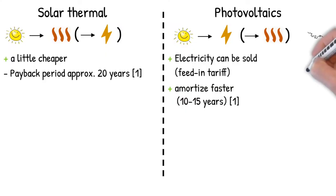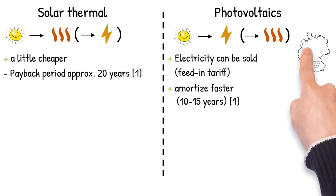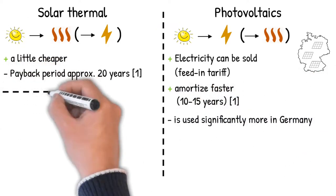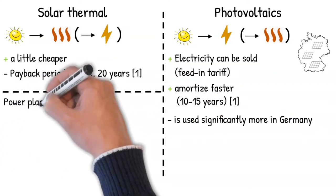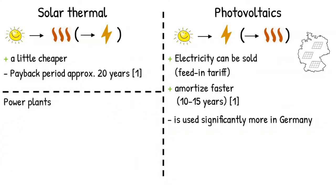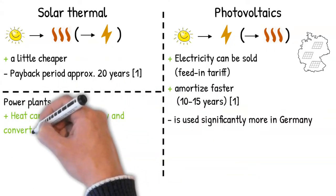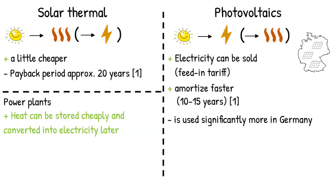Due to the greater use of heat pumps and the advantages in amortization, significantly more PV systems have been installed on private house roofs in Germany in recent years. Looking at the differences between solar and PV power plants, one advantage of solar thermal is the ability to store the heat. This means that the energy can be converted into electricity at a later date, and solar thermal power plants can also generate electricity when the sun is not shining.